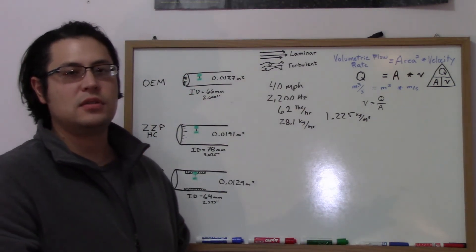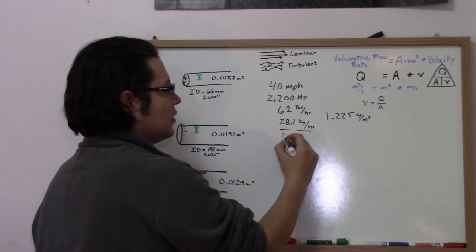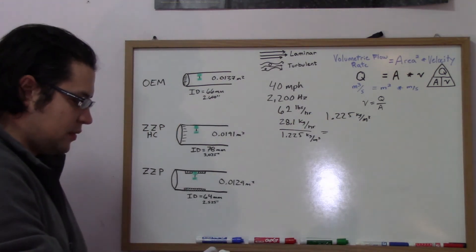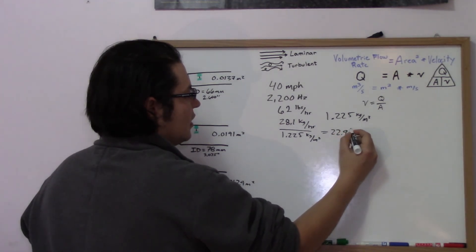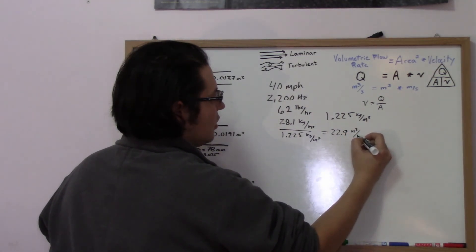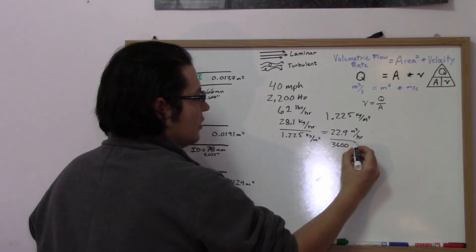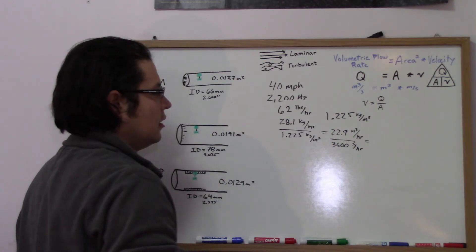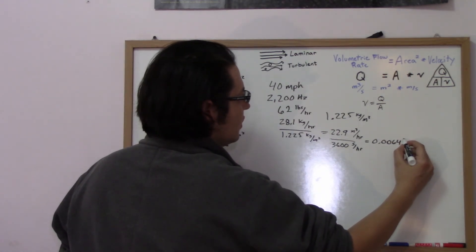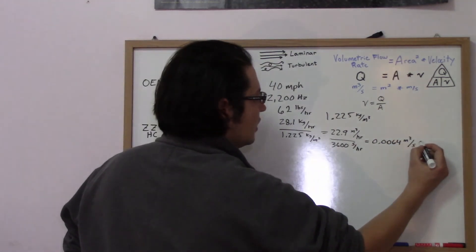We can take that standard air density, divide that by our mass airflow rate, and that will give us a volumetric flow rate of approximately 22.9 cubic meters per hour. We need to get that per second, so we'll divide that by 3600 seconds per hour, and that will give us our volumetric flow rate of cubic meters per second. That equals Q.